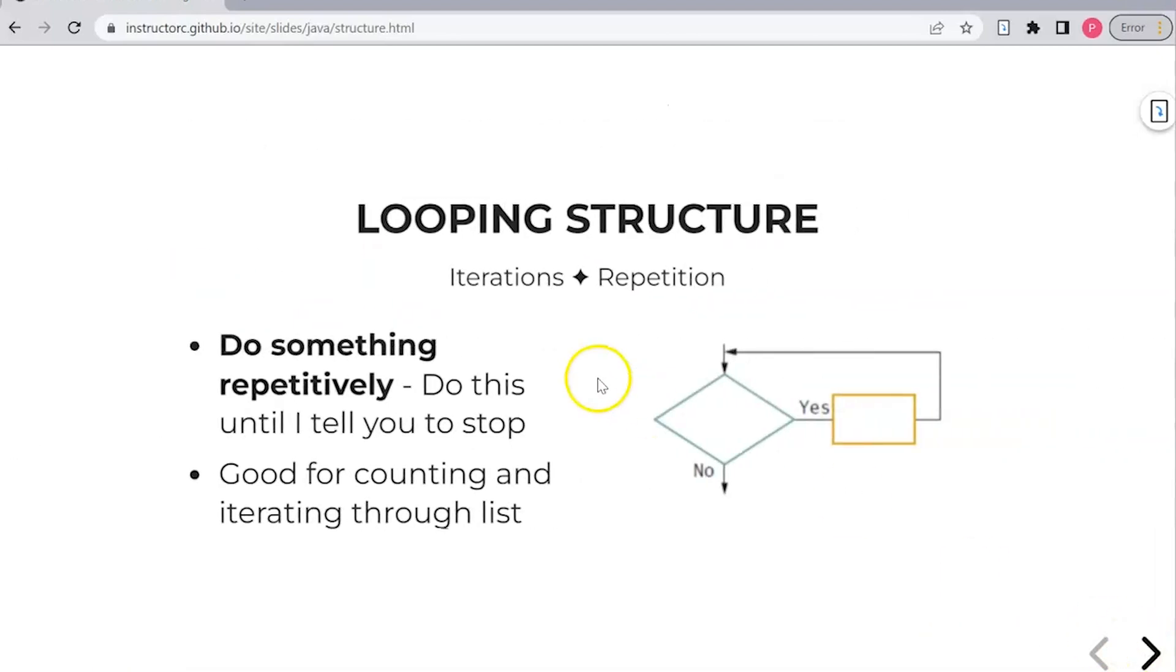Then you have the loop and structure where you want to do something repeatedly until the condition is met. And so here we ask the question, do this item in yellow until this condition is met. And then once it's met, continues on the rest of the program.